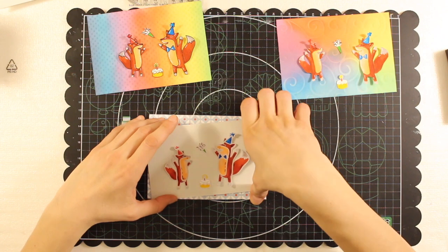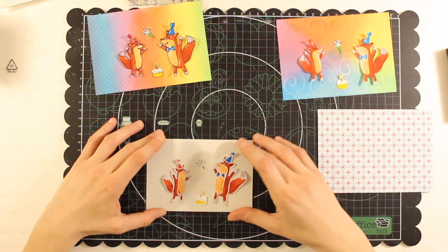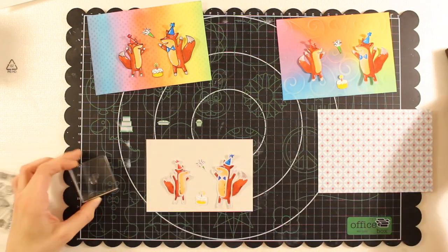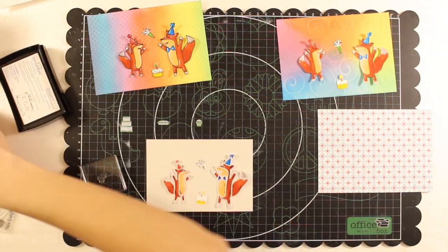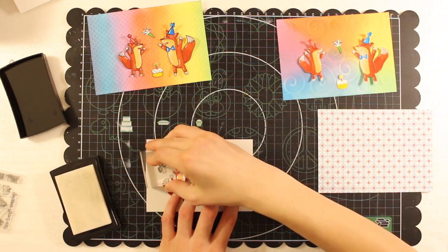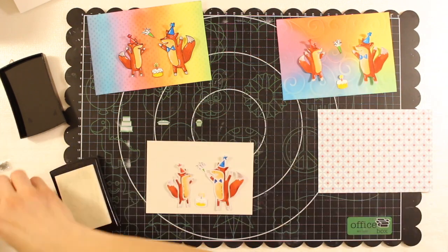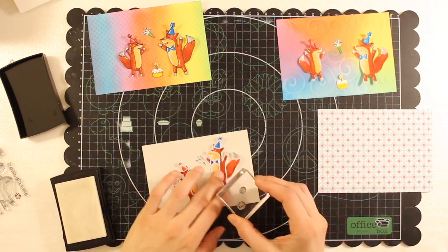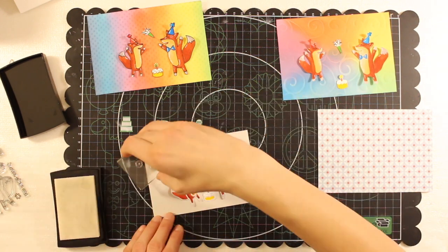And then starting from the card with the embossed foxes, I'm stamping the confetti with the VersaMark ink, and then I will emboss them with clear powder.